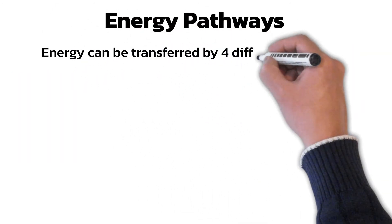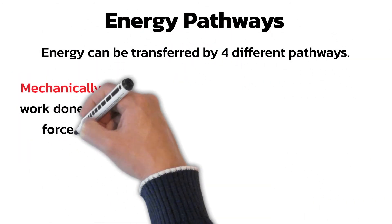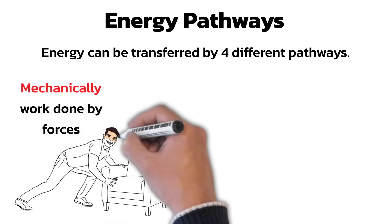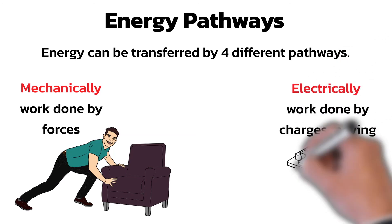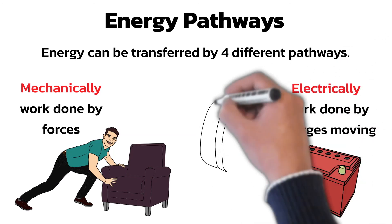Energy can be transferred by four different pathways. The mechanical pathway is when work is done by forces, like moving this chair. The electrical pathway is when work is done by moving charges, usually in the wires of an electric circuit.